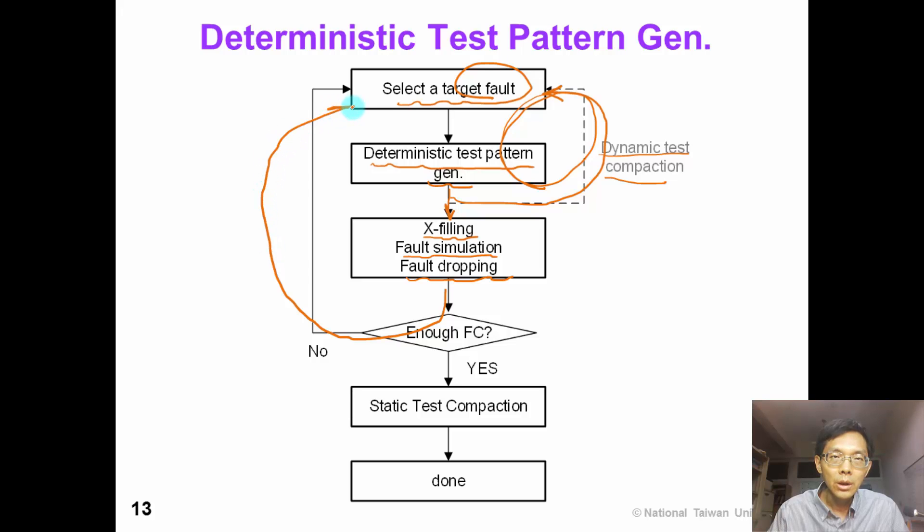If the fault coverage is not satisfactory, we would loop back to select more target faults. Otherwise, we would leave the test generation stage and move on to static test compaction and then we finish the ATPG system.